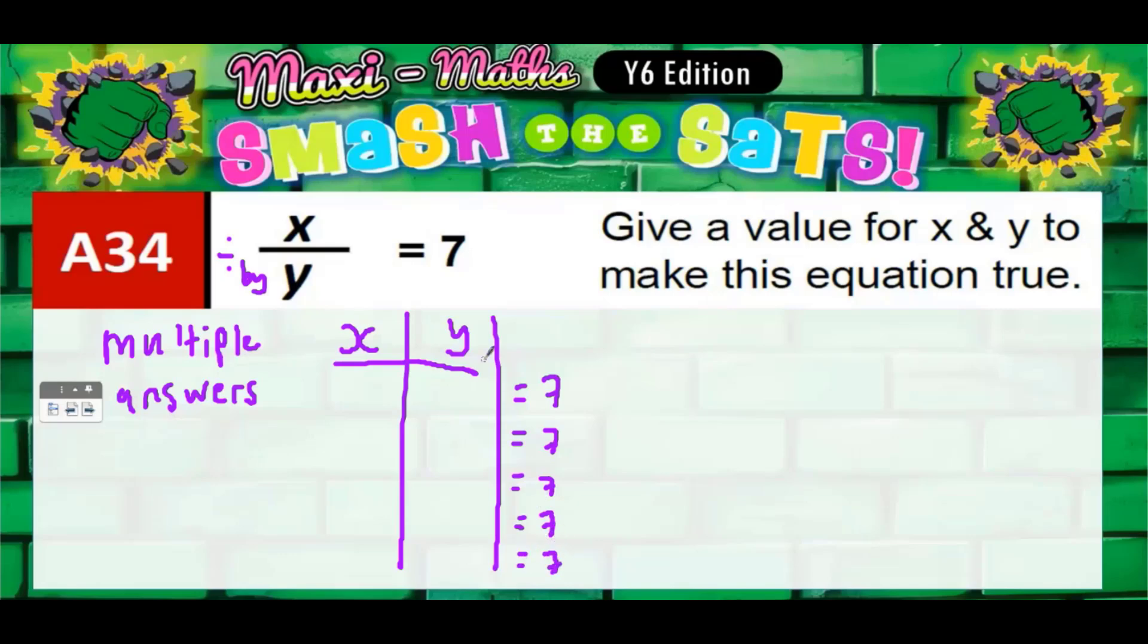So let's say we were dividing by 2. Let's say y was 2. What could we divide by 2 to get 7? Well, 14. 14 divided by 2 would give 7.